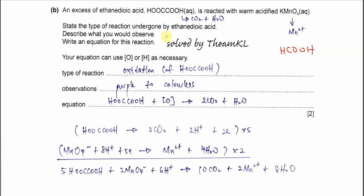State the type of reaction, describe observations, and write the equation. The type of reaction is oxidation of ethane dioic acid. The observation is that acidified KMnO₄ is purple in color. After the ethane dioic acid is oxidized, the KMnO₄ is reduced to Mn²⁺, which is colorless. So the observation is a color change from purple to colorless.